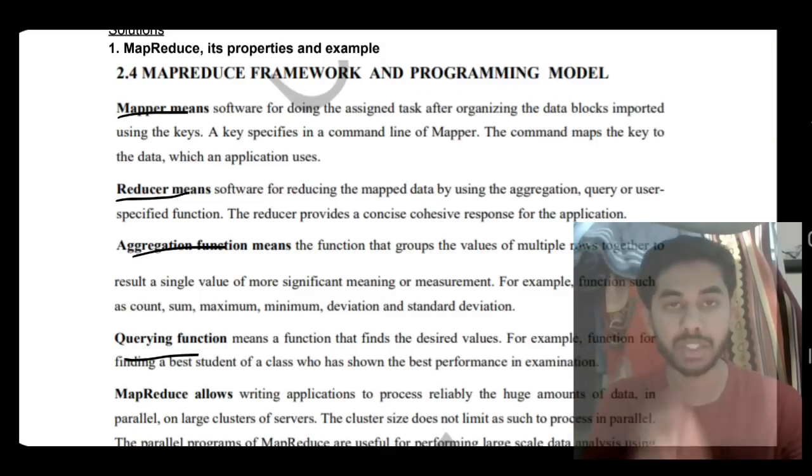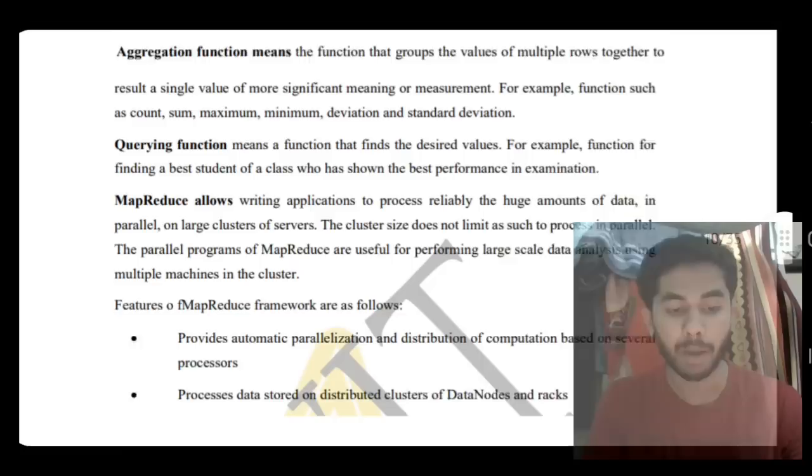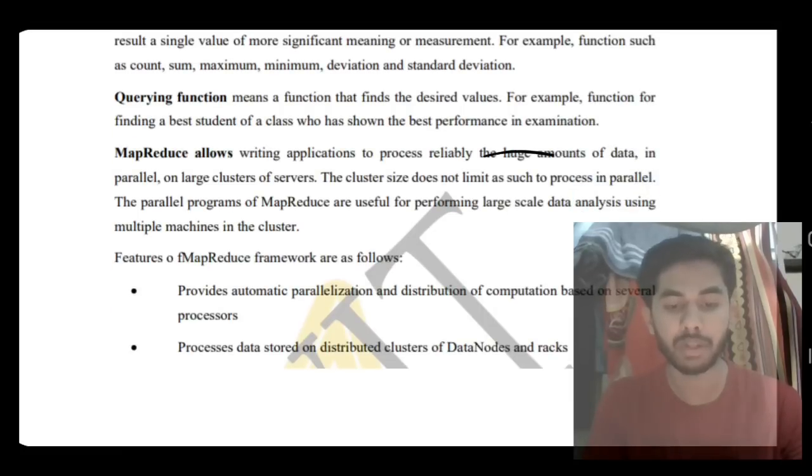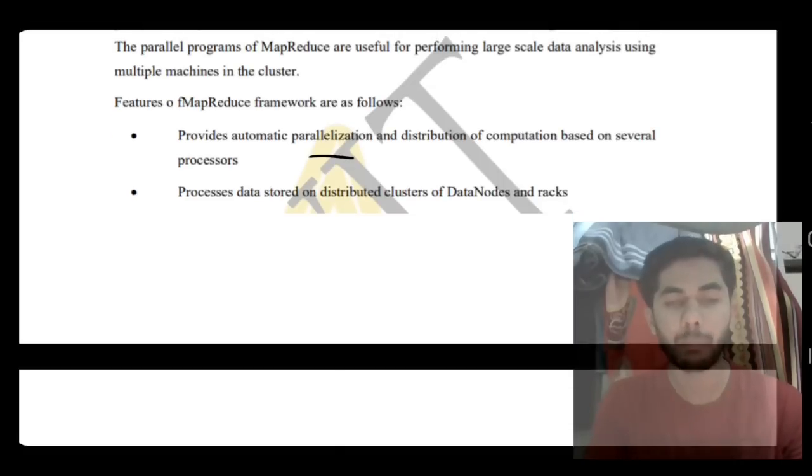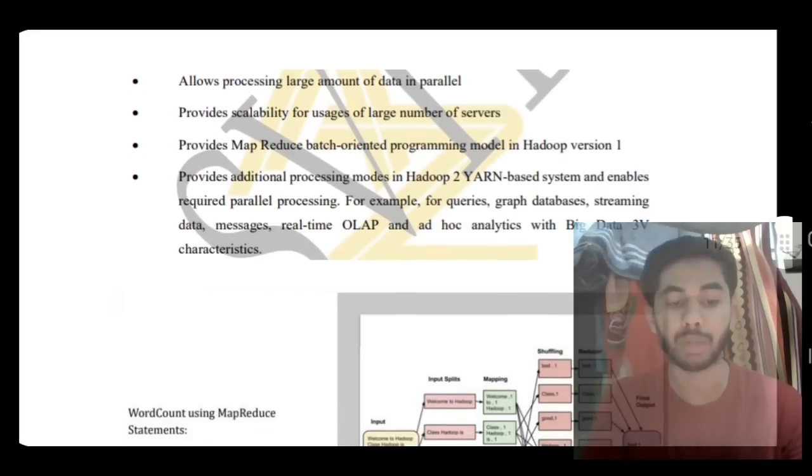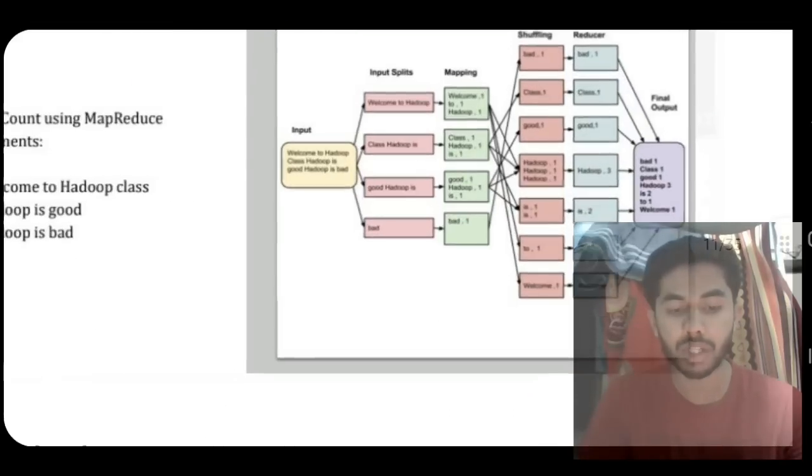MapReduce allows us to write applications reliably for huge amounts of data. It categorizes and shortens data. The features include parallelization and distribution of computing, making large amounts of data processing in parallel, and it is scalable for a large number of servers.